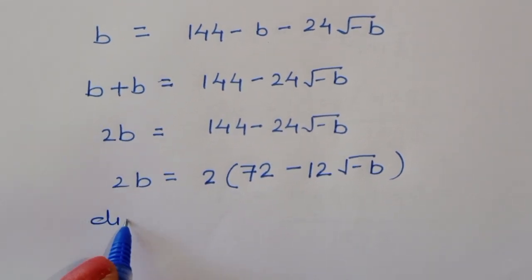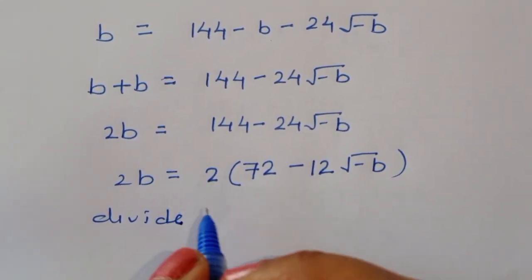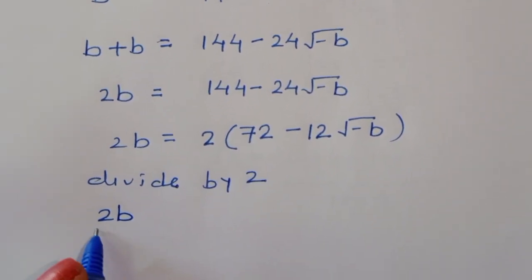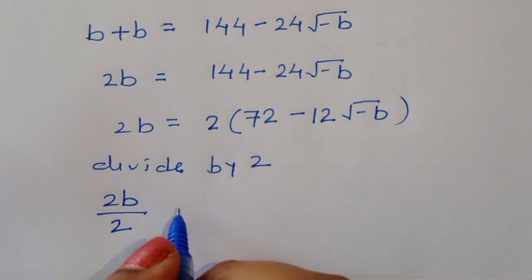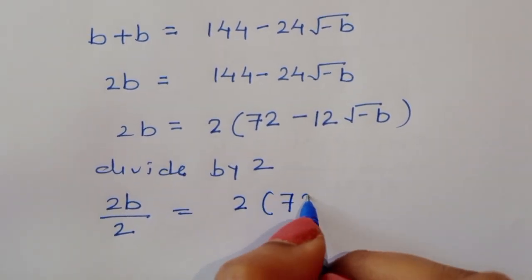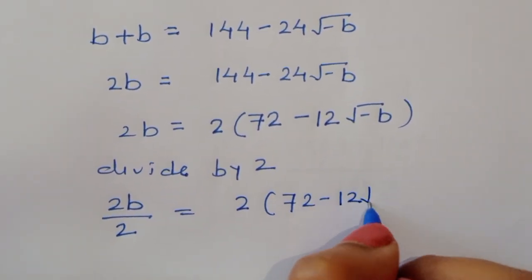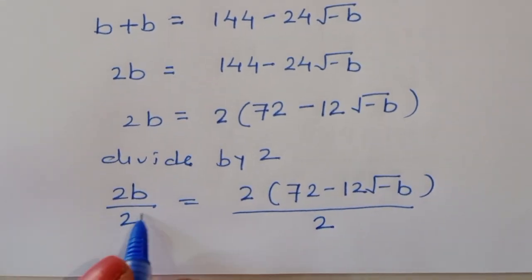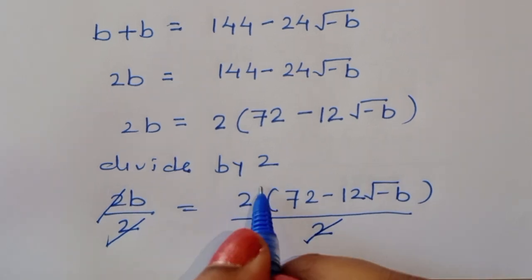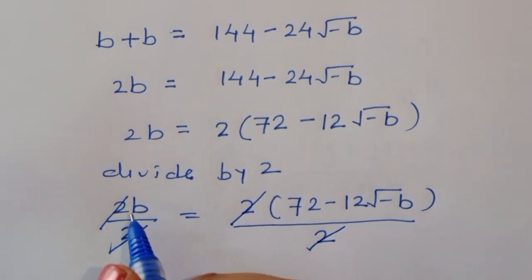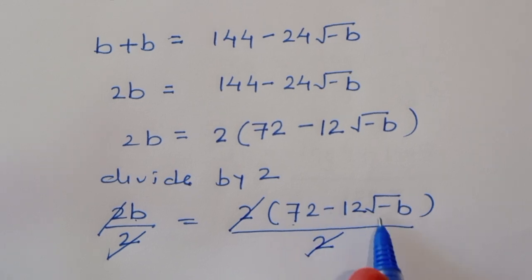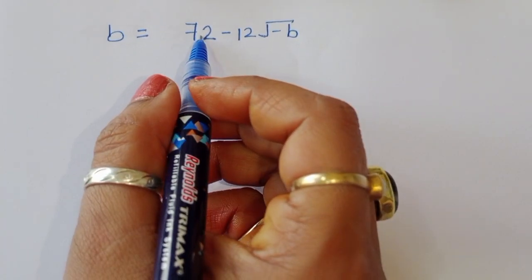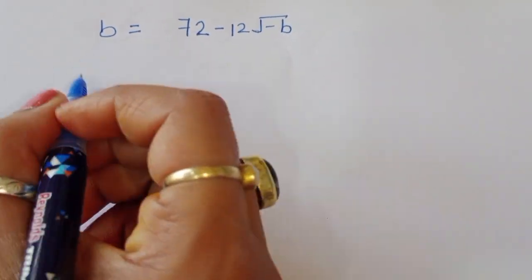Dividing both sides by 2, the 2s cancel and we get b = 72 - 12√(-b).